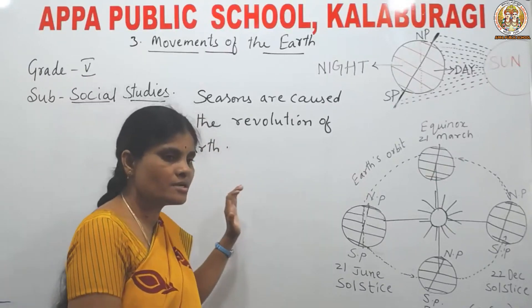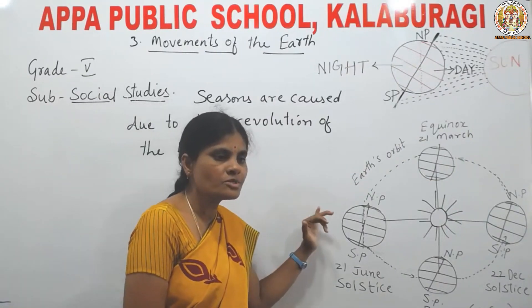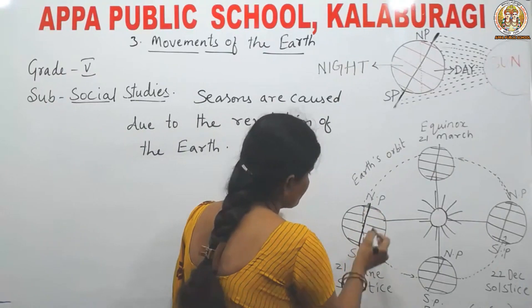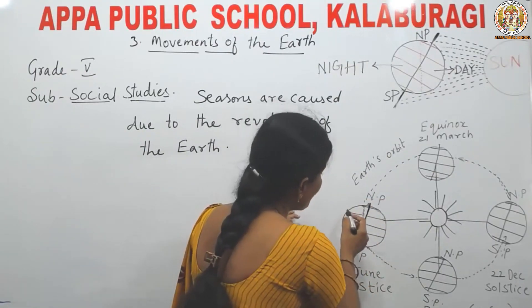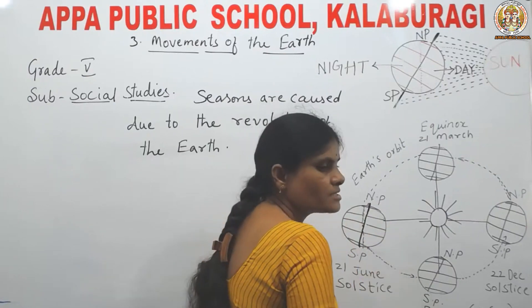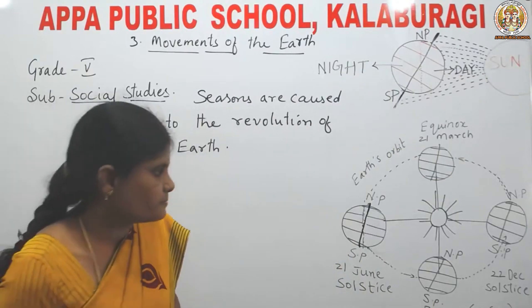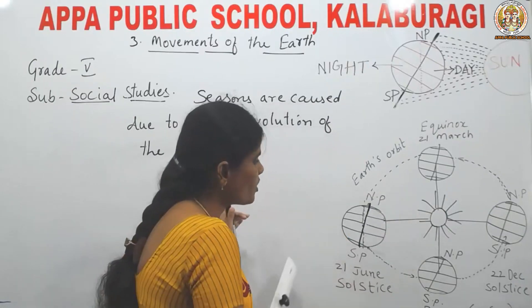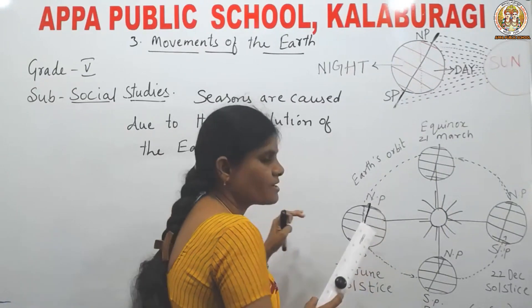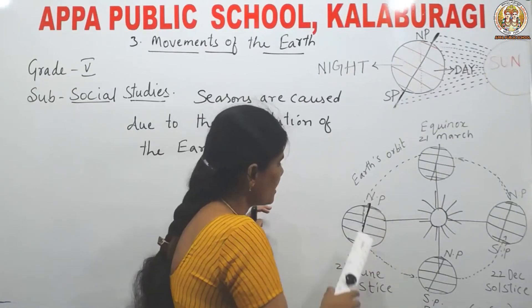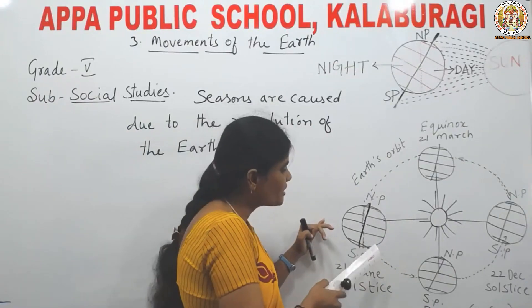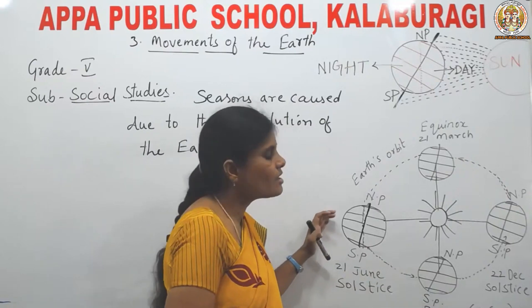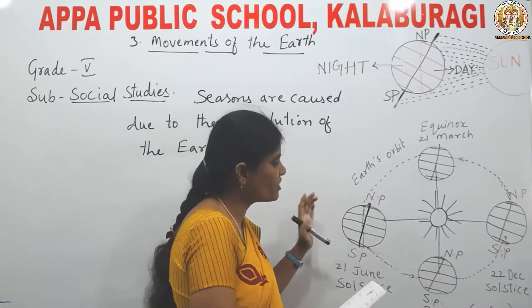Due to the slant of the earth's axis, only a part of the earth comes opposite to the sun. The part which comes opposite to the sun experiences direct sunlight. So the part which experiences direct sunlight has summer season. At the same time, the other part which is not inclined towards the sun receives slanting rays of the sun, so it experiences moderate temperature and has winter season.